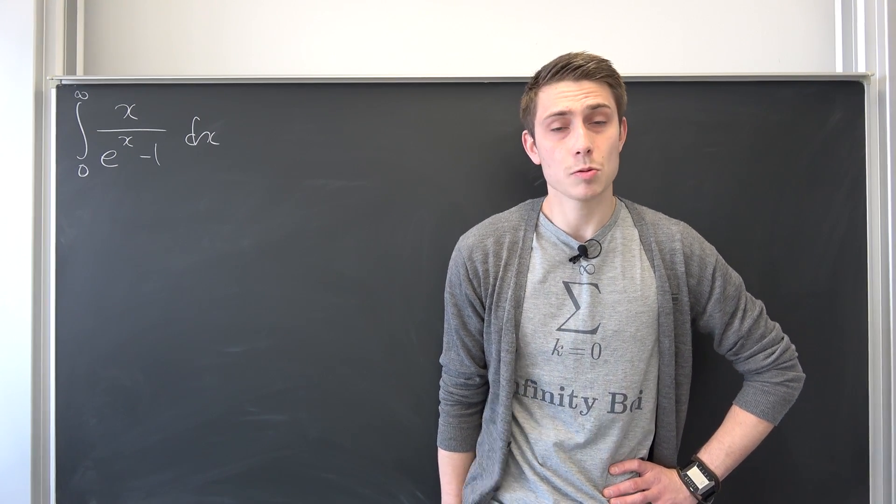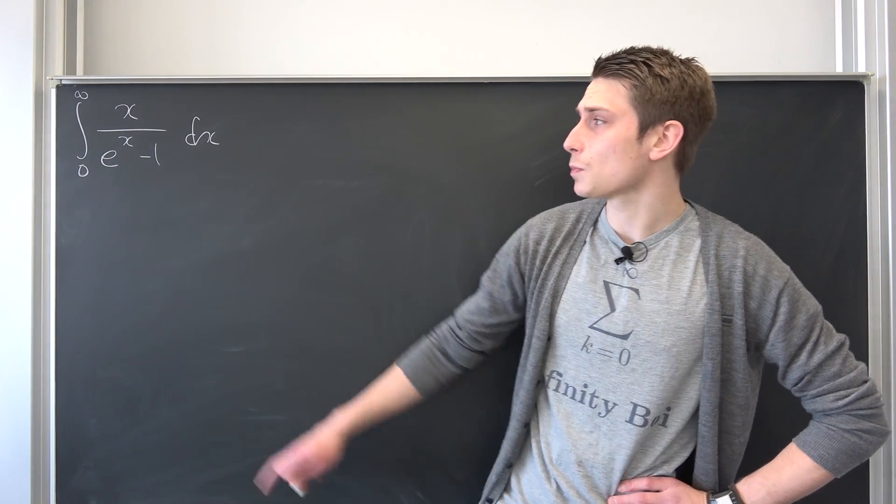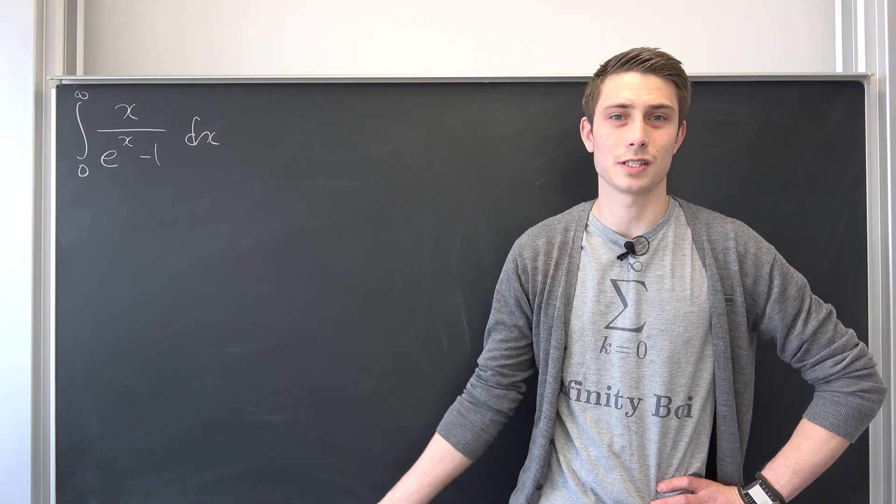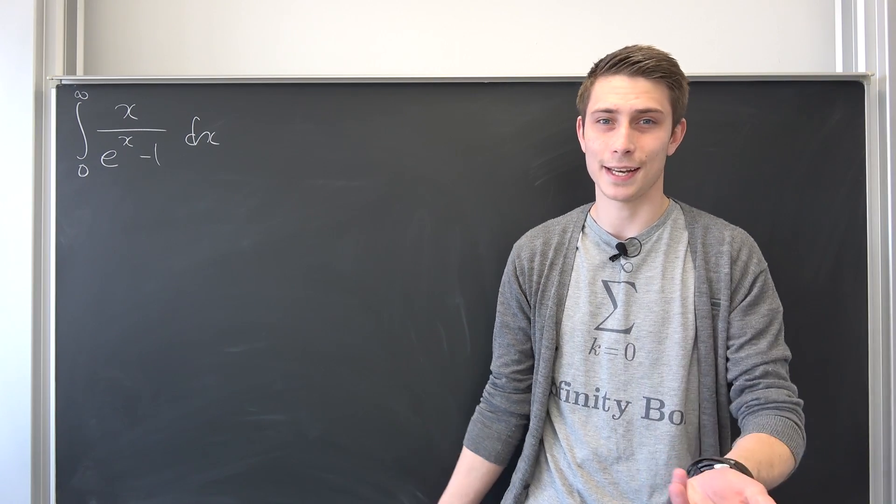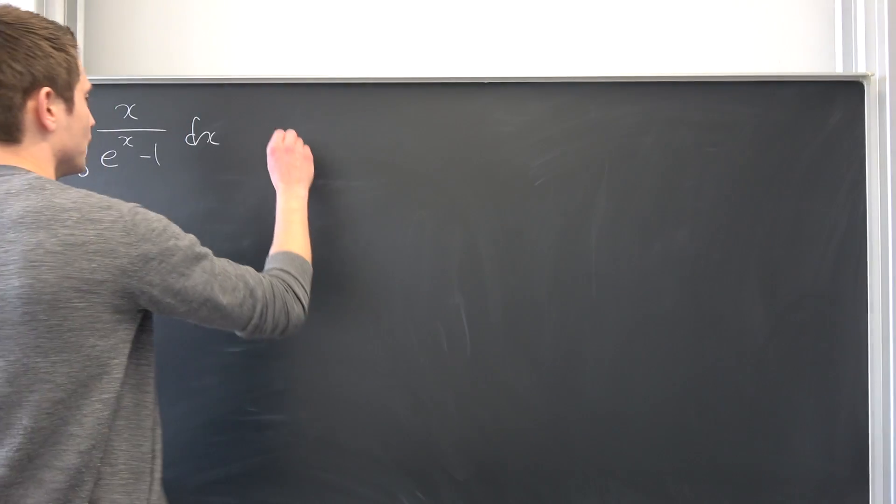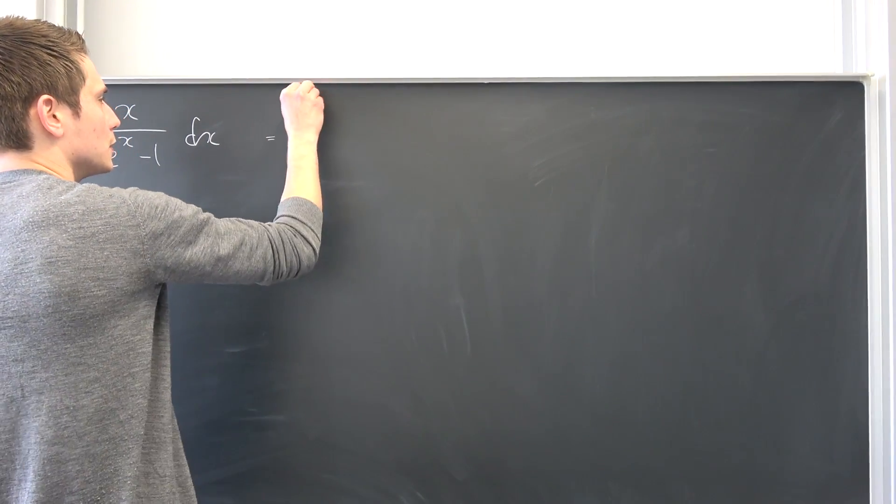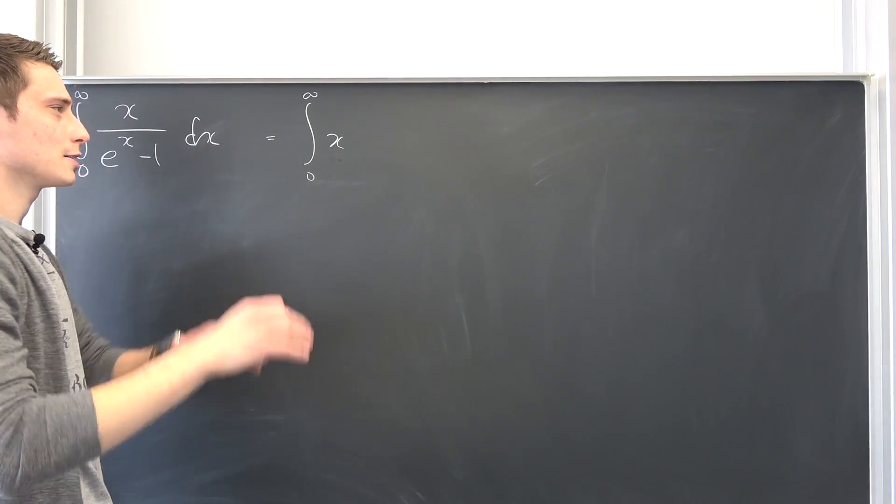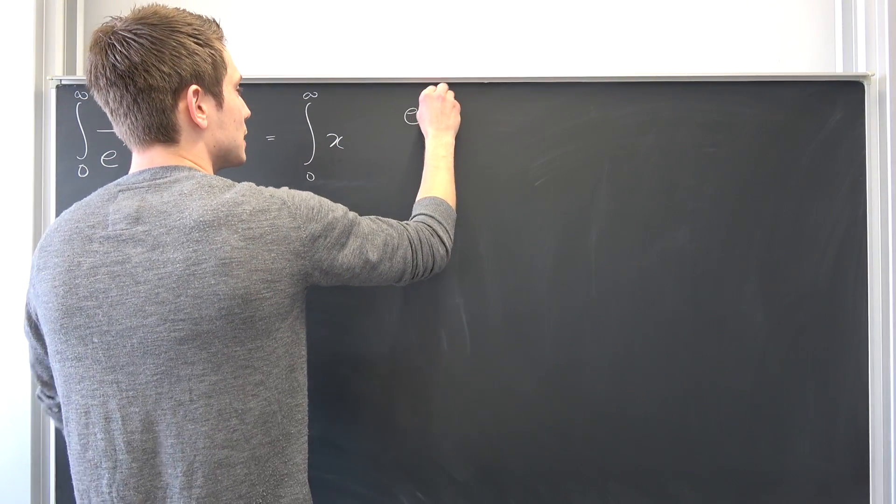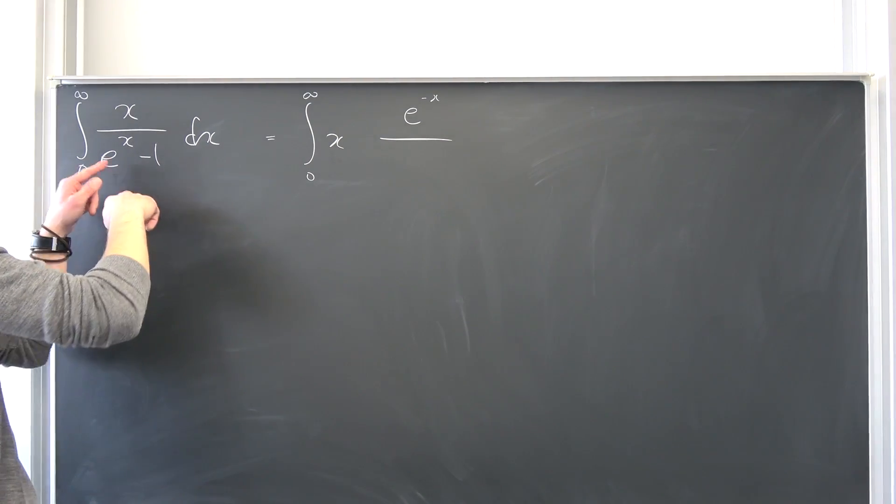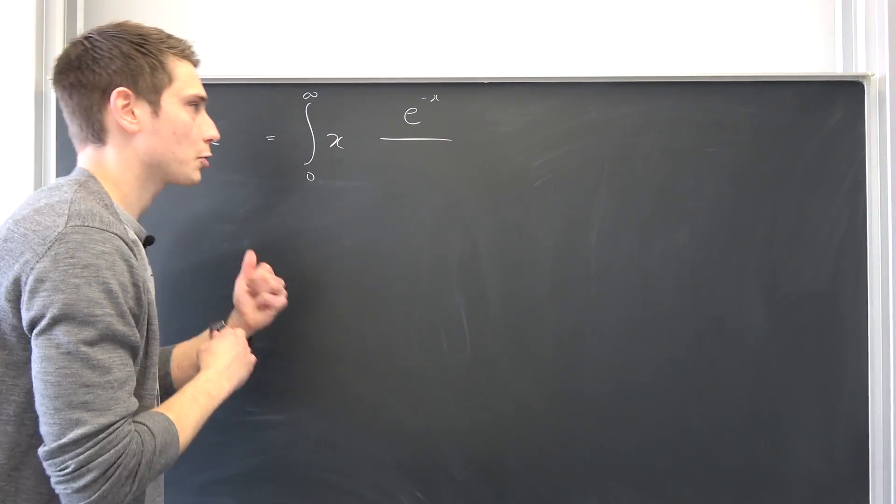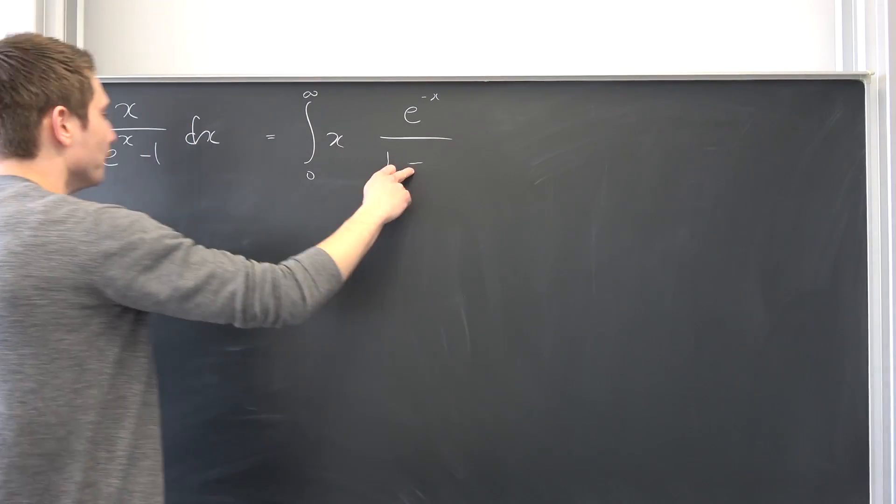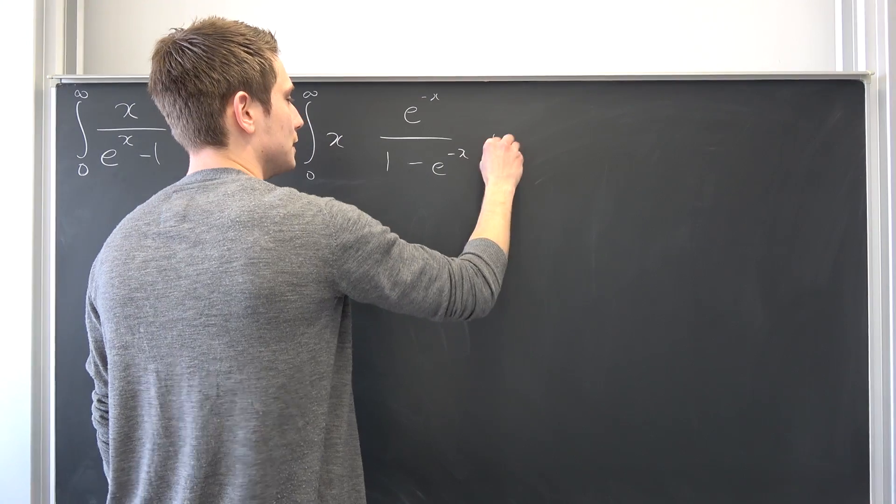Why not multiply top and bottom by e to the negative x? We can do this. It's a limit process and algebraic manipulation is allowed in limit processes. We are going to get an integral from zero to infinity of x times e to the negative x over, e to the x times e to the negative x, that's 1 as a matter of fact, minus e to the negative x dx.